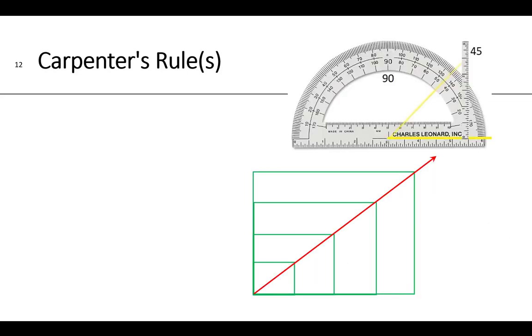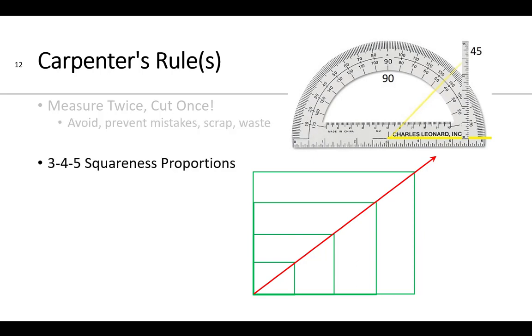And then we have the famous carpenter's rule, or rules plural. Measure twice, cut once. What we're trying to say here is you want to avoid prevent any mistakes in scrap and waste. Because if you make a mistake, that's exactly what it is. The other carpenter rule is using the proportions 3, 4, 5 to determine if something's square. Now it can be a 6, 8, 10, or it can be a 9, 12, 15, or it can be a 12, 16, 20, or it can be a 15, 20, 25. These are all the same proportions.